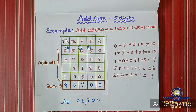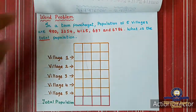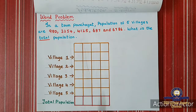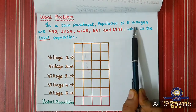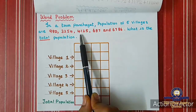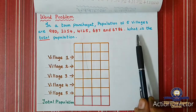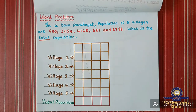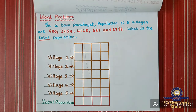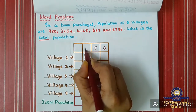Understood children? Now the next one is a word problem: what is the total population? In a town called Panjaya, the population of five villages are 980, 3,254, 4,125, 687, and 6,786. What is the total population? Whenever they ask for total, we have to add the numbers. So we shall add the numbers. First, we have to write the place values.